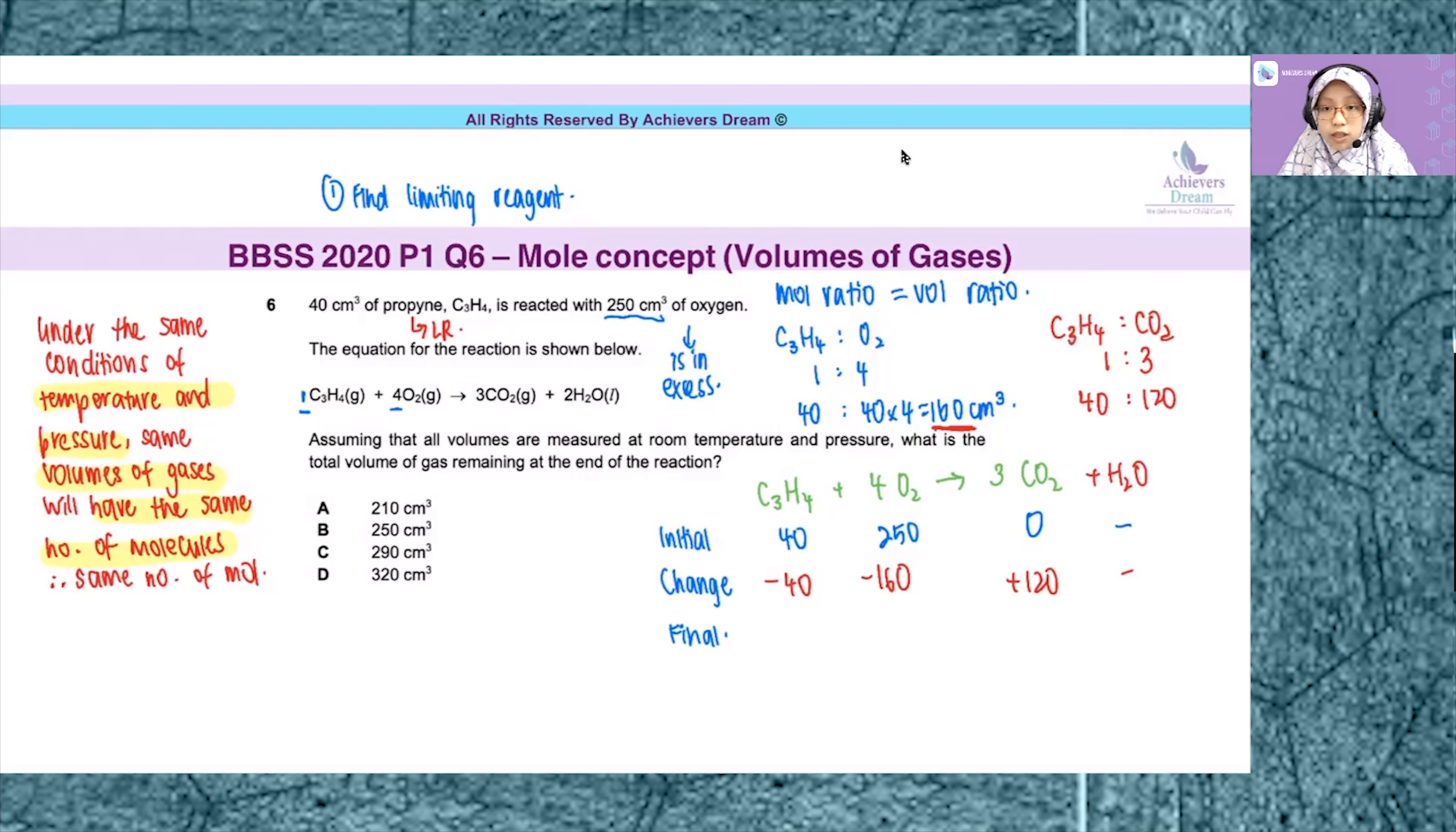It's a positive value. For the change in my reactants, I put negative. Minus 40, minus 160 because they are consumed. Now let's calculate the final values. 40 minus 40 is 0. 250 minus 160 is 90. 0 plus 120 means 120 cm³ of carbon dioxide forms.